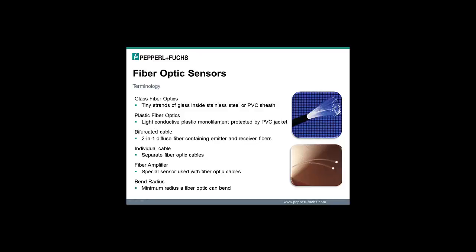Terminology used with fiber-optic sensors: glass fiber-optics are a type of fiber-optic cable with tiny strands of glass bundled together inside a stainless steel or PVC sheath, and can be used with visible red or infrared light sources. Plastic fiber-optics use a light conductive plastic monofilament material protected by a PVC jacket and are only used with visible red light sources. Bifurcated refers to a two-in-one diffused fiber cable containing both emitter and receiver fibers. Individual cable refers to separate fiber-optic cables used for both emitter and receiver. Fiber amplifier is a special sensor for use with fiber-optic cables that houses both emitter and receiver. Bend radius is the minimum radius a fiber-optic cable can bend without damage.